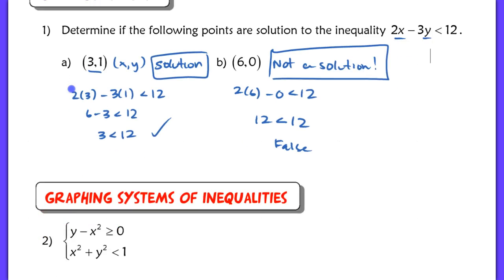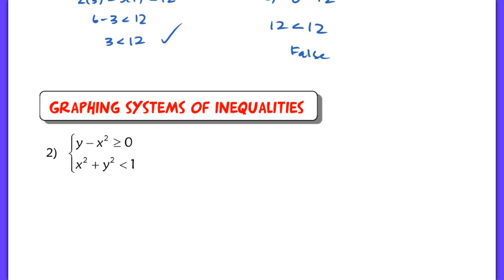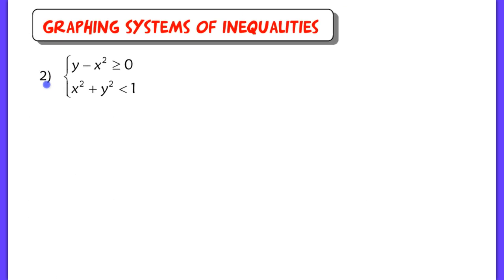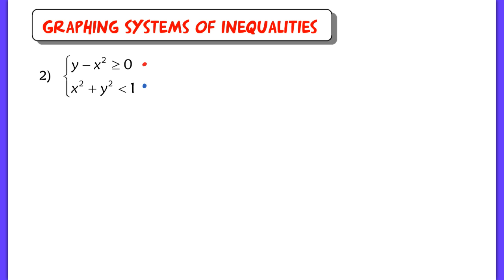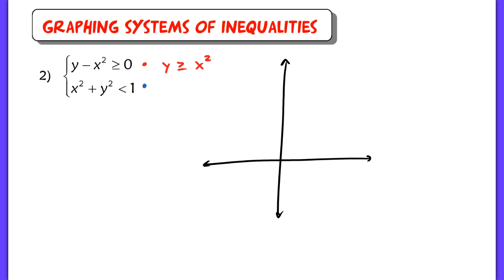Now when we start graphing our systems of inequalities, this is where it gets a little bit trickier. We're going to start off with an easier system and then work our way to a more difficult one. I'm going to graph the top inequality in red and the bottom one in blue. When you look at this, you should recognize this as a parabola — y is greater than or equal to x squared.